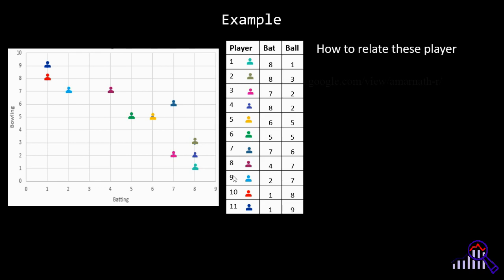How to relate this player using a regression line? In our previous video you can see the details about regression line. A line equation is given as y equal to mx plus b. m represents the slope whereas b represents the offset. So this is the formula for computing the slope and this is the formula for computing the offset.